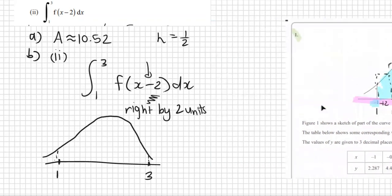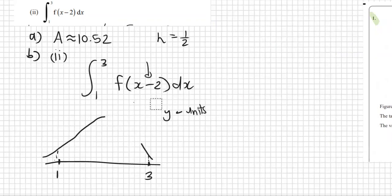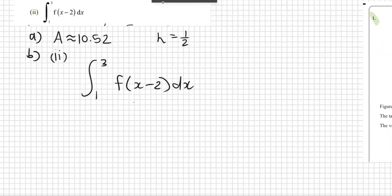So we can straightaway just grab our answer from the previous question A. We know now this is a trick question, and we know that this area is the exact same thing, which is 10.52 units squared. And that concludes question 1.